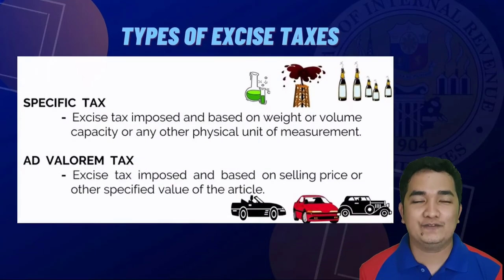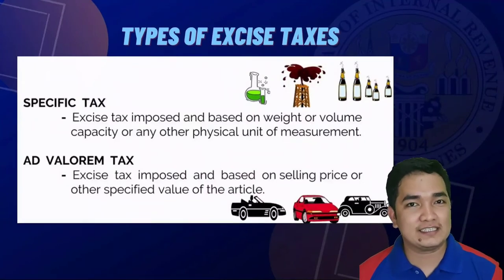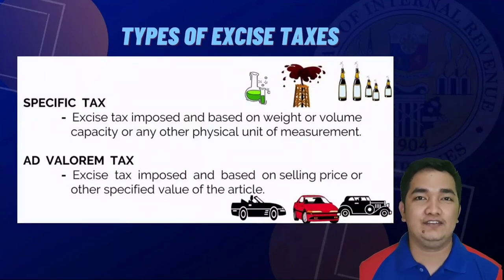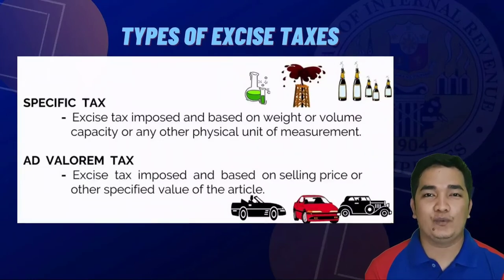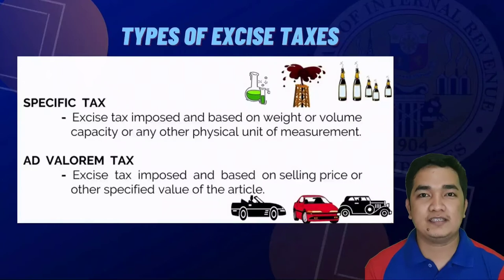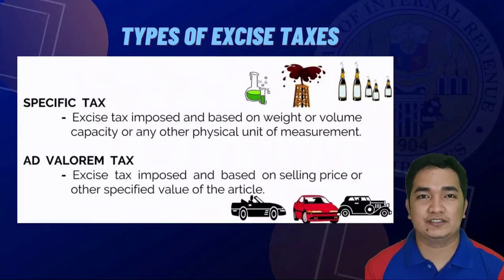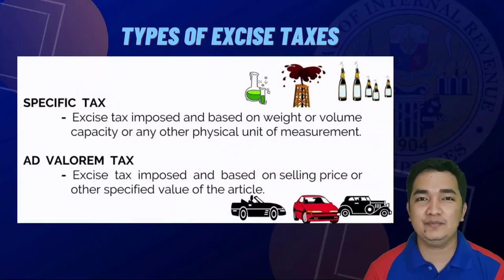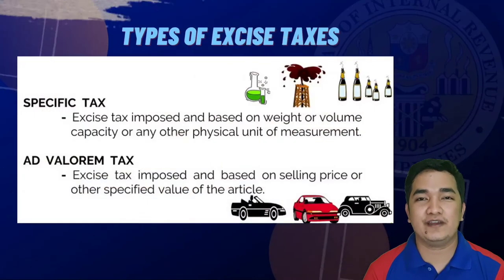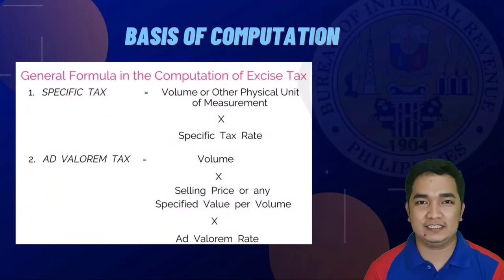We have two types of excise taxes: specific tax and ad valorem tax. Specific taxes are imposed and based on weight, volume, capacity, or any other physical unit of measure. Ad valorem taxes are imposed and based on the selling price or other specified value of the article.